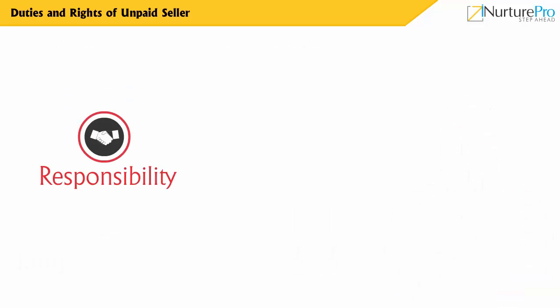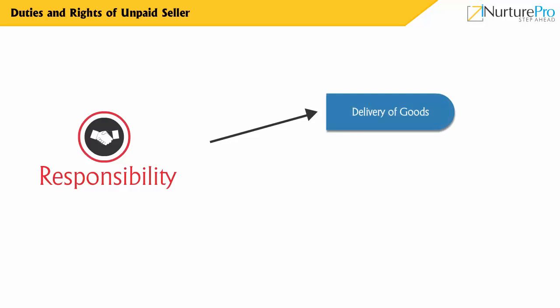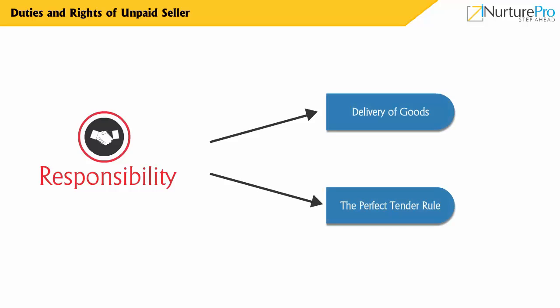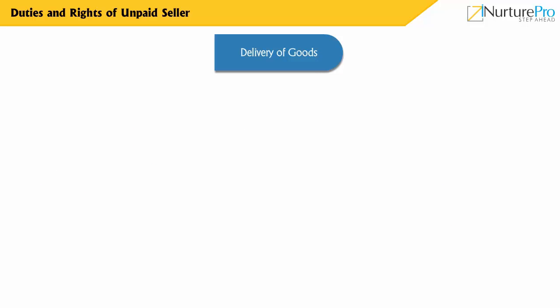The seller has important duties to perform in the contract of sale. The responsibilities of a seller include delivery of goods, the perfect tender rule, holding goods at the time of sale, and giving necessary notifications regarding delivery to the buyer.